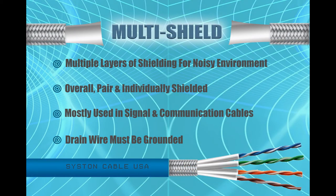Cables may be constructed with multiple layers of shielding with both braided and foil designs for a noisy environment. Communication cables are also designed to be paired and individually shielded to further aid in preventing crosstalk and coupling. Overall shielded cables are where all wire pairs are wrapped inside a single shielded material.